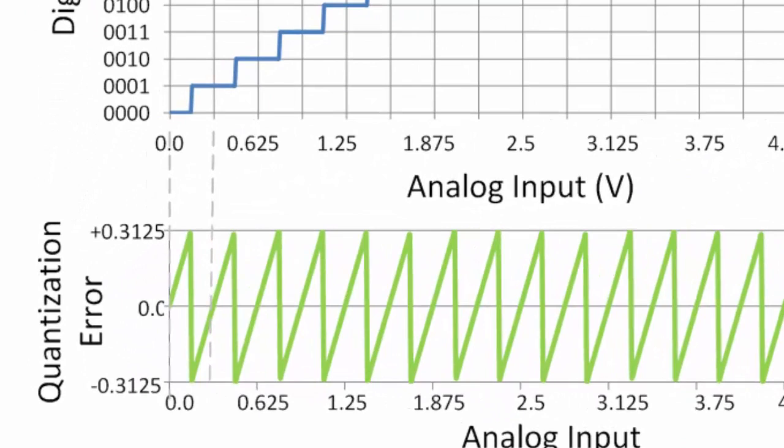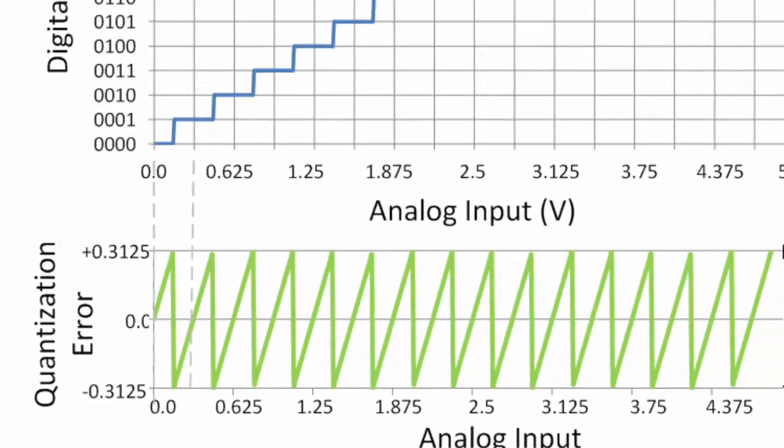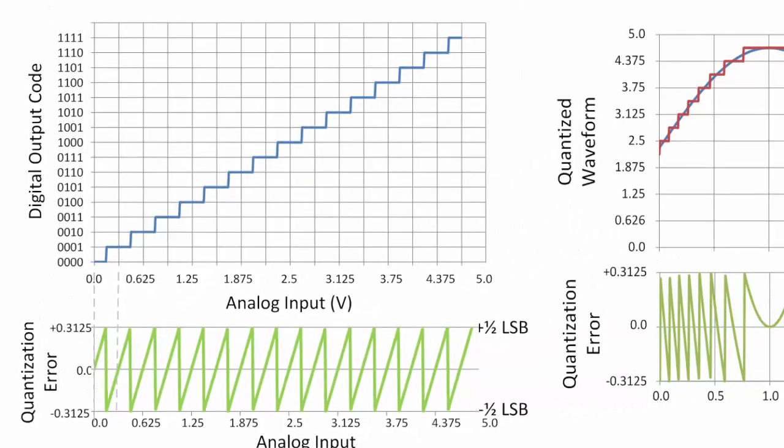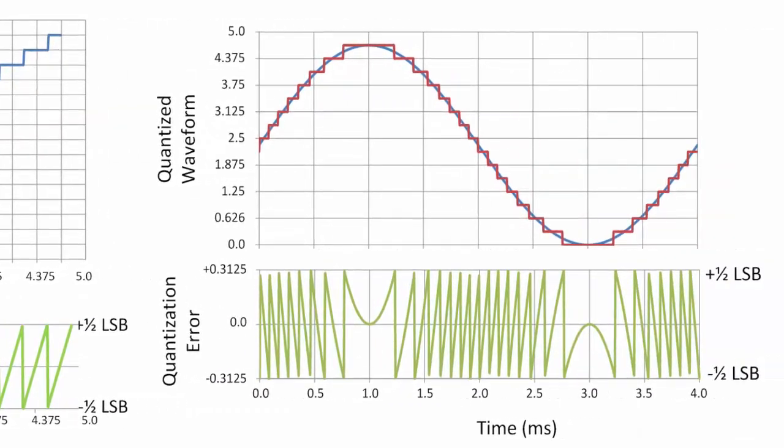Sweeping the analog input voltage, you can see that each digital output code has one unique analog input where the error is zero. Moving above or below this analog signal causes the error to increase or decrease to a maximum value of half an LSB width. This error due to the digital rounding is called quantization error. On the right-hand side, you can see a digitized sine wave versus the continuous analog input. At the bottom of the page, you can see the quantized error for the sine wave.